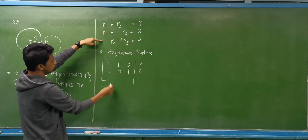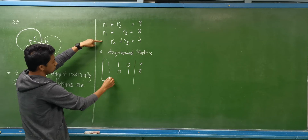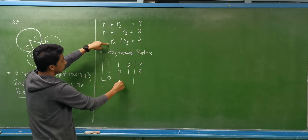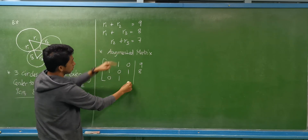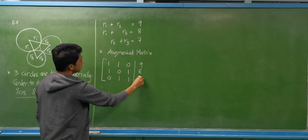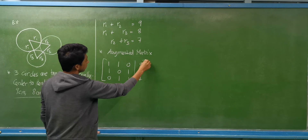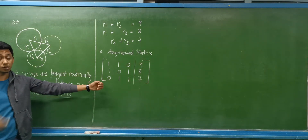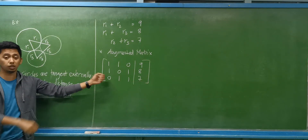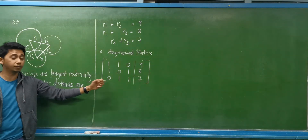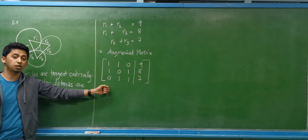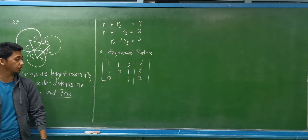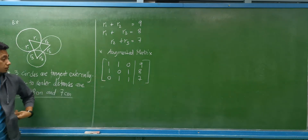We don't have R1 in the third equation, so this is 0, 1, 1, and the constant 7. So this will be our augmented matrix. We just need to find the reduced echelon form using the Gauss-Jordan method.